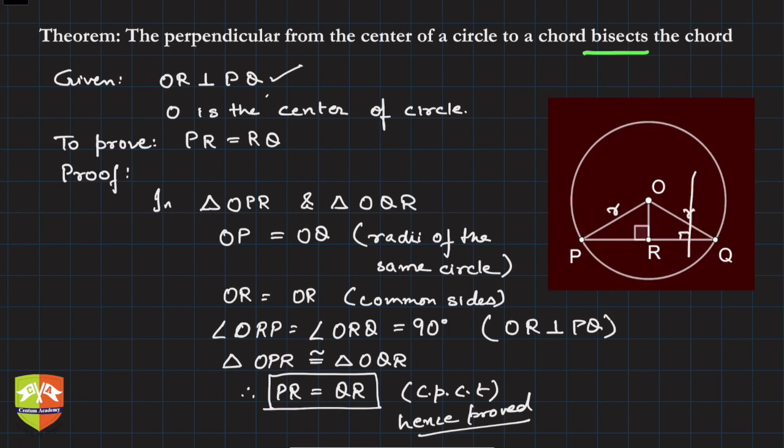If R is given to be the midpoint of PQ and you join it to the center, then you have to prove that the line segment OR is perpendicular to PQ. That will be the converse statement of this given theorem. We will study that converse in the next session.